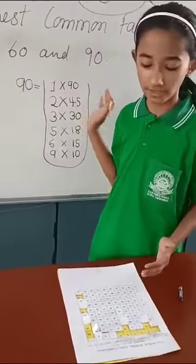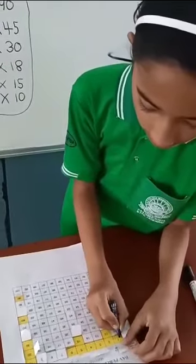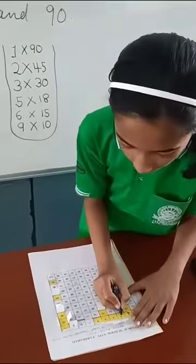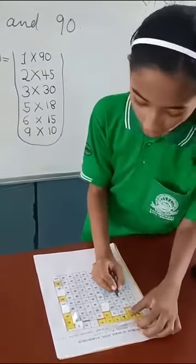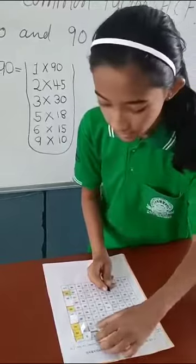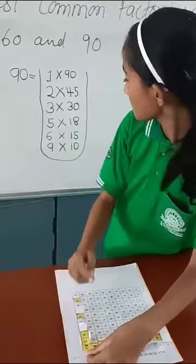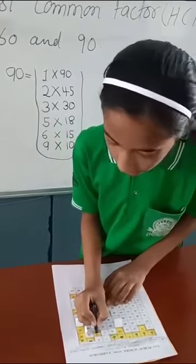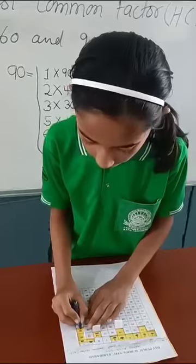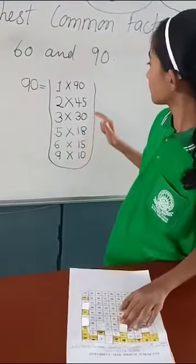Now I am folding the factors of 90 here. 1 is the factor of 90. 2, 3, 5, 6, 9, 10, 18, 30, 45, 90. These are the factors of 90.